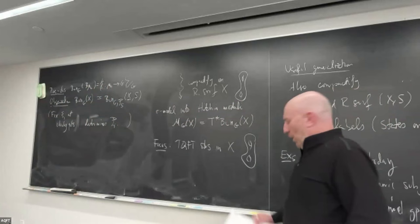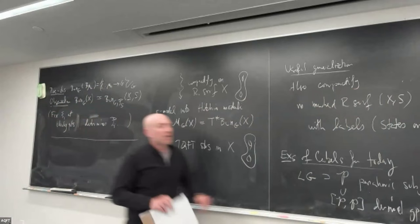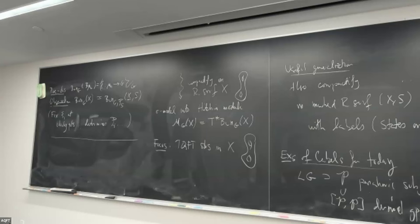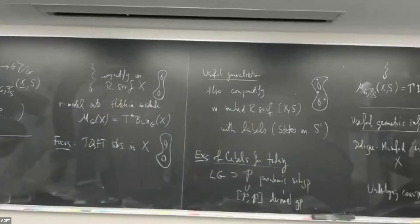The reason for this reformulation is that this moduli — where you don't say the word 'parahoric' — is easy to describe in families as we move the curve. If we fix parahoric structure, it's hard to say things in families as you deform the curve, but with the DM curve you just move the Deligne-Mumford curve.